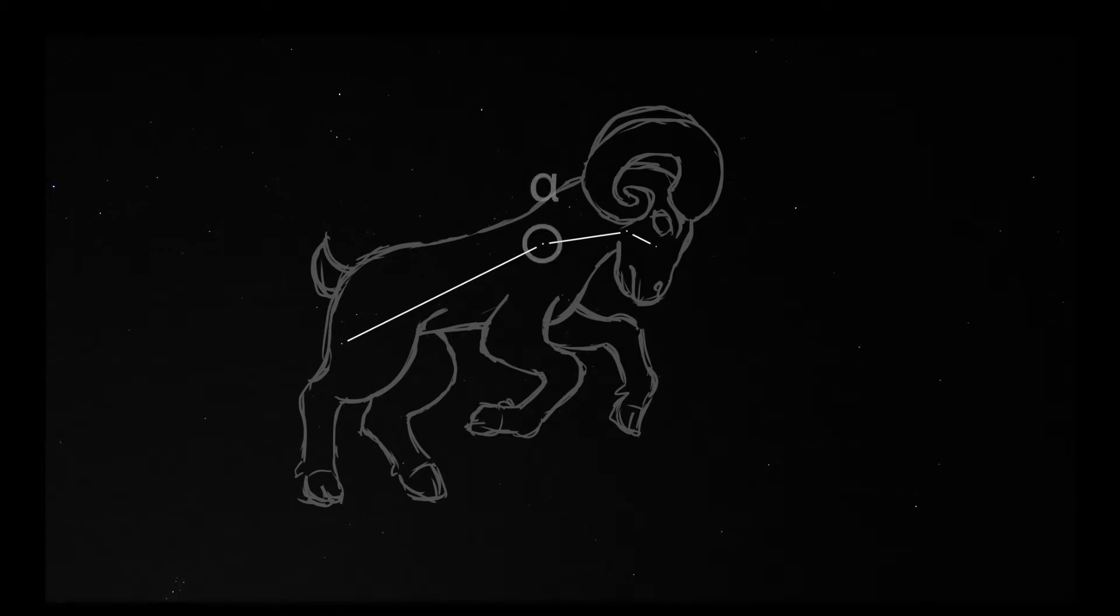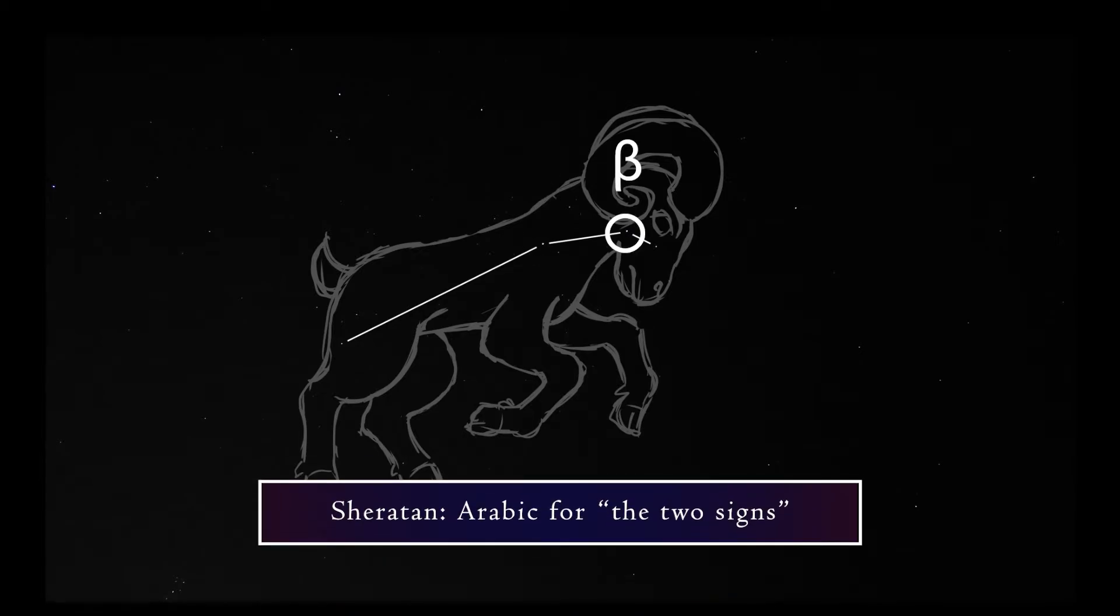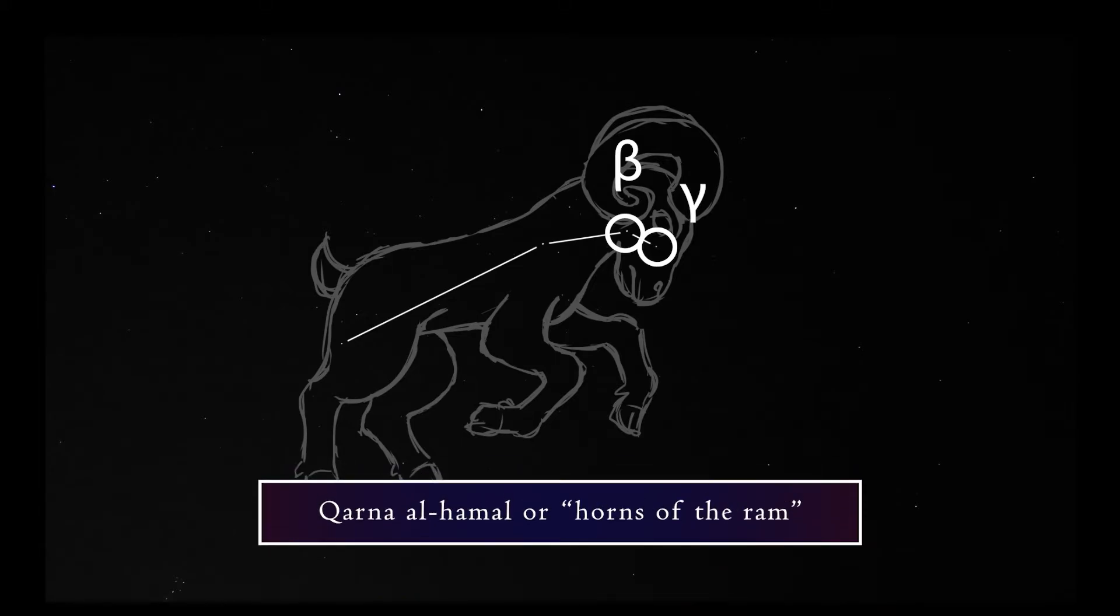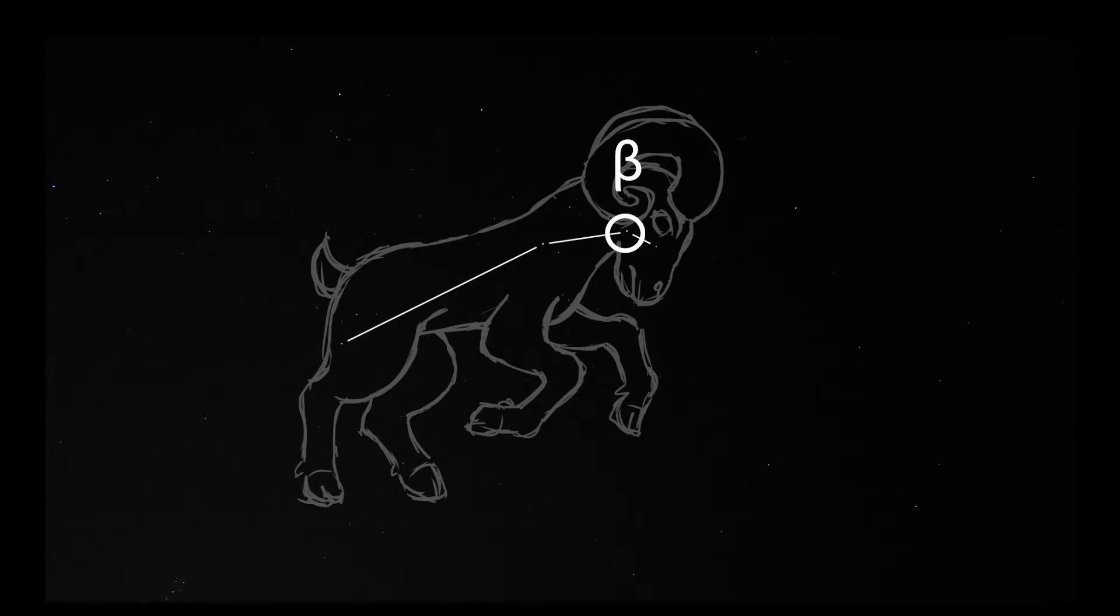Beta Ariadis is also known as Sheratan. It is Arabic for the two signs because of its proximity to Gamma Ariadis. Together they make up Karna al Hamal or horns of the ram. Sheratan's visual magnitude is 2.1 and it is about 59 light years from Earth.